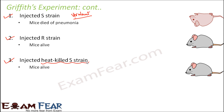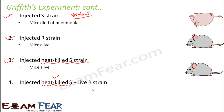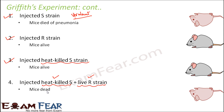The most interesting part was the fourth experiment. He took a mixture of heat-killed S strain and live R strain and injected it into a mouse. The heat-killed S was already dead and the live R strain was non-virulent, so the expectation was that the mouse should be alive. But when he injected this mixture of heat-killed S and live R strain, he found that the mouse died in a few days and pneumonia developed.